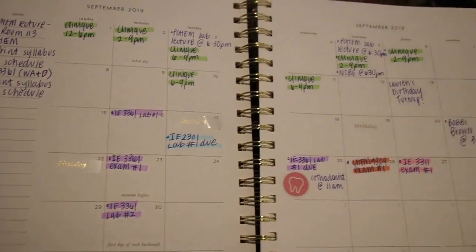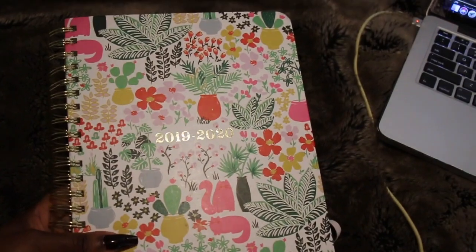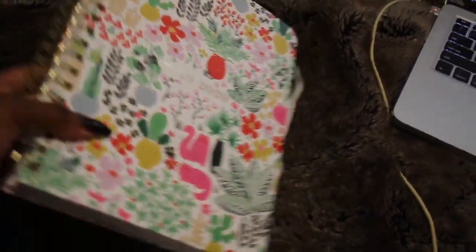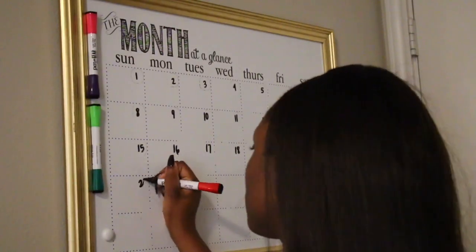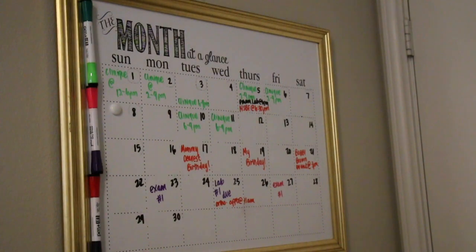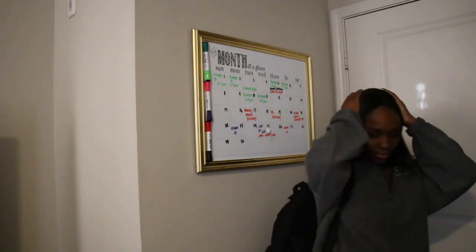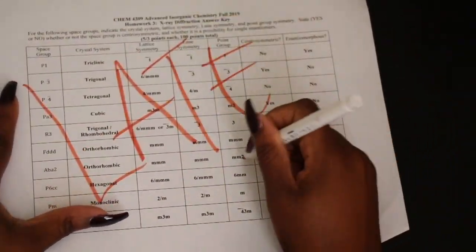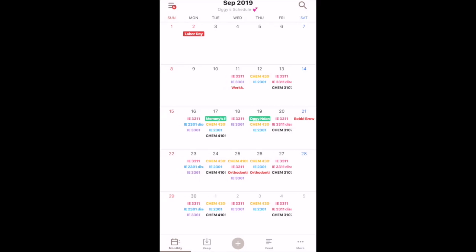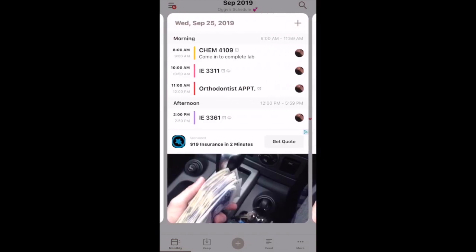I bring my planner with me everywhere I go to keep up with and write down any events or assignments that I need to do, and I usually transfer my activities recorded in my planner to my wall calendar. The problem I was faced with was that sometimes I would forget to look at my wall calendar or my planner. To fix this issue I started using the TimeTree app, which helped me to better manage my activities for the day.